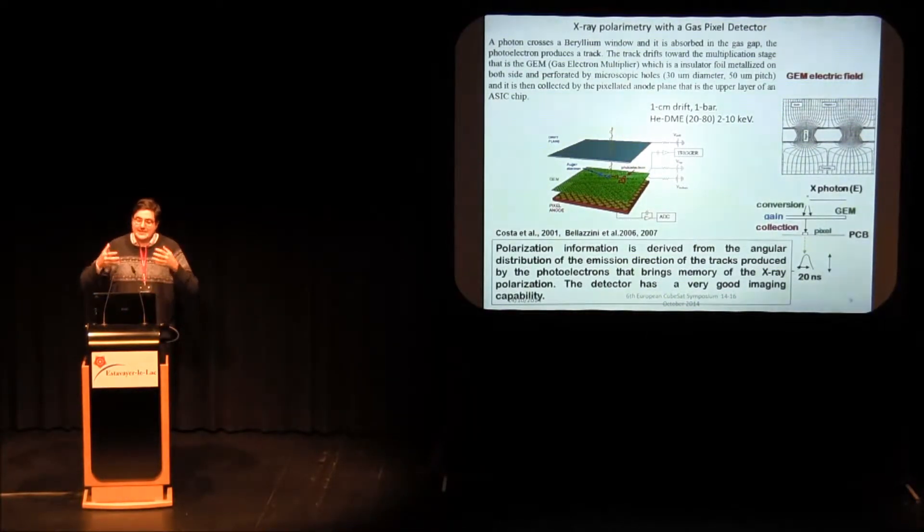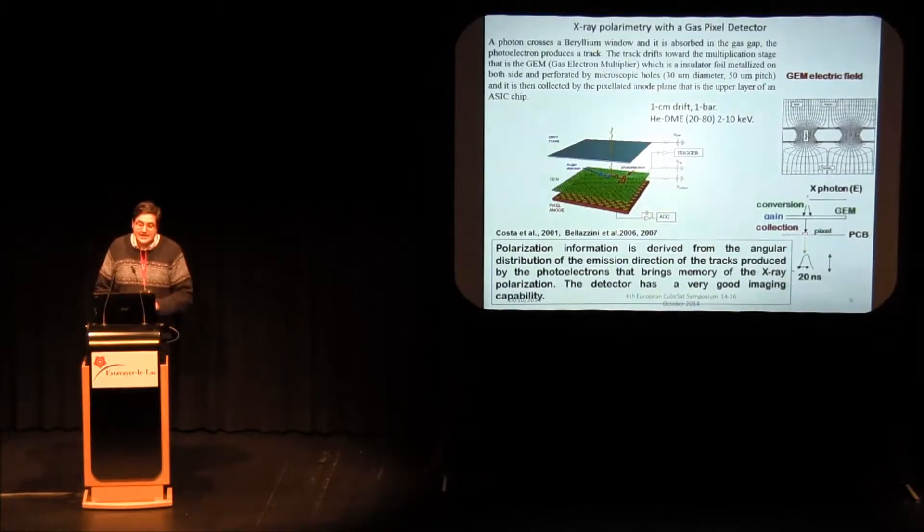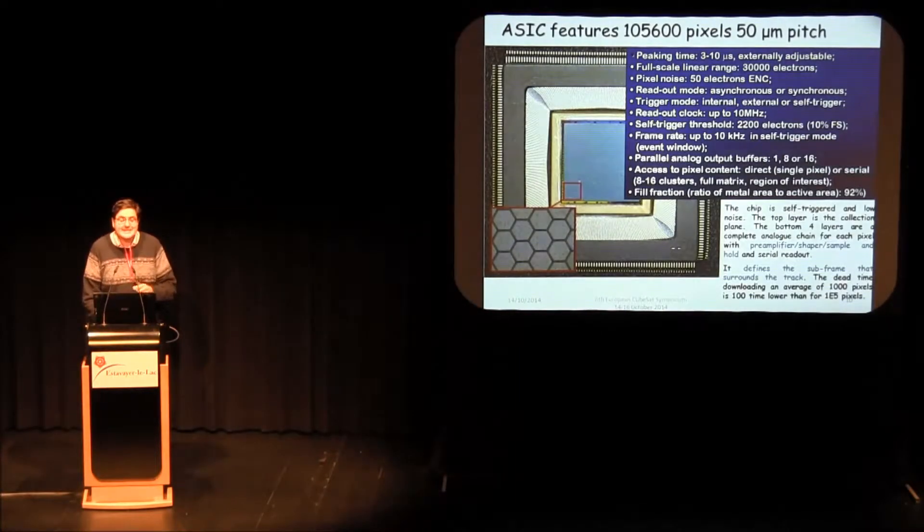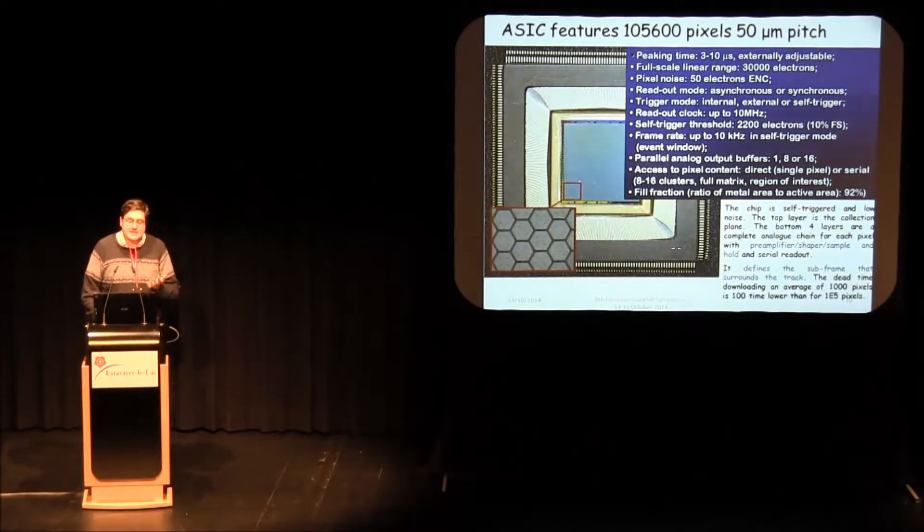Photoelectrons and eventually Auger electrons are ejected and they create a track. Since there is an electric field, the tracks drift toward the multiplication plane that is actually a gas electron multiplier. That is an insulator substrate perforated by microscopic holes and metalized on both sides, for which in the holes the electric field is so large that when the electrons of the tracks arrive there, they get multiplied and are eventually collected by the top layer of an ASIC CMOS chip that is underneath. This is the ASIC CMOS chip that has actually a multilayer ASIC. The top layer is pixelated with many hexagons with 50 micron pitch; there are 100,000 pixels.